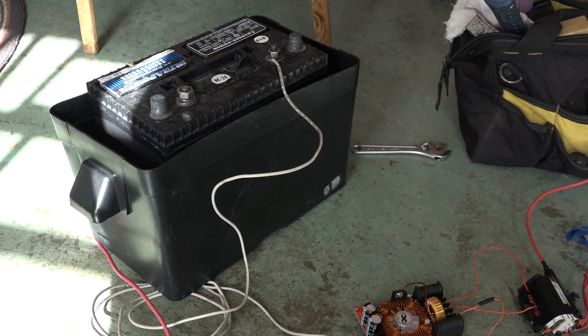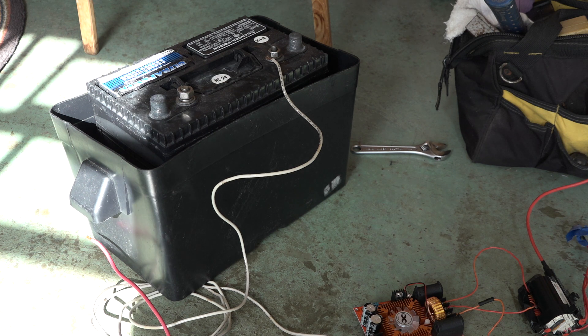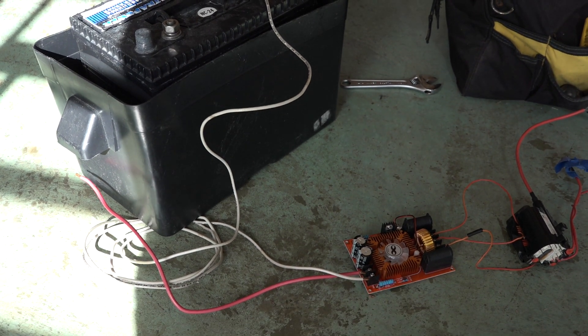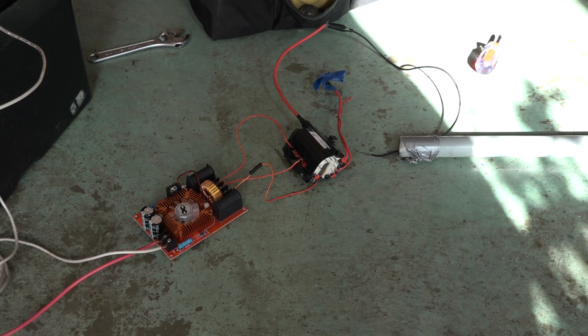There we go. We're using this old lead acid battery as the power source because this thing draws probably about 10 or 15 amps of current at 12 volts and I don't want to risk blowing out any of my power supplies if they can't quite handle that. The positive and negative wires of it are just hooked up into this driver and the output of the driver is hooked up to my flyback transformer.